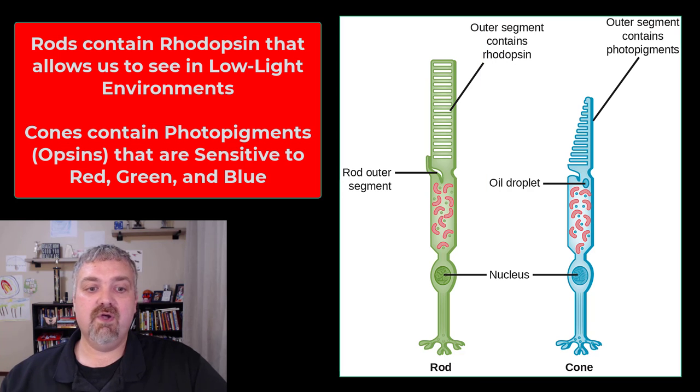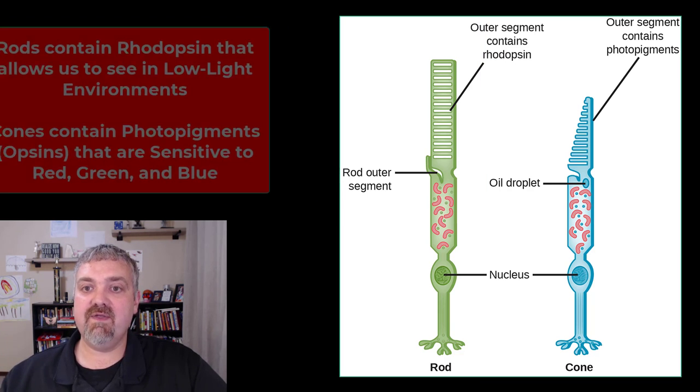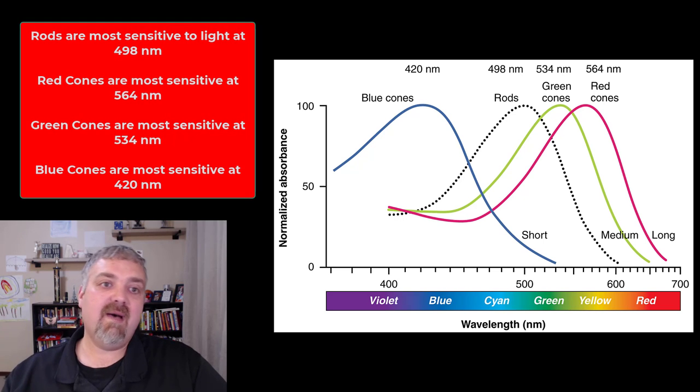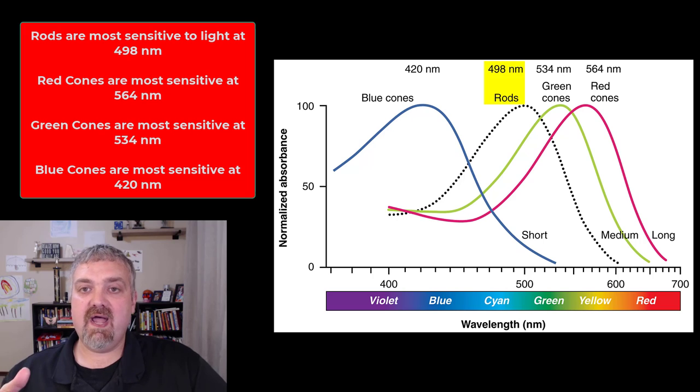Your cones perceive the three different primary colors: red, green, and blue. Each of these opsins is sensitive to a limited wavelength of light. You see rods there, the peak sensitivity of that rhodopsin is 498 nanometers.